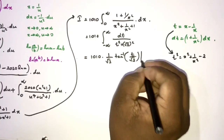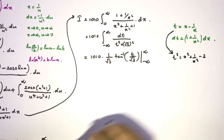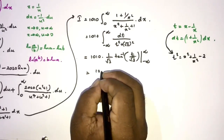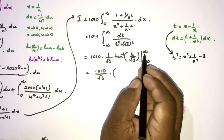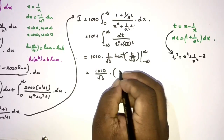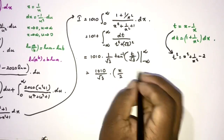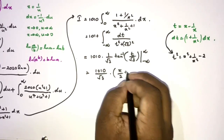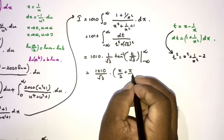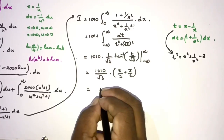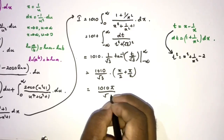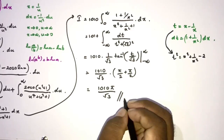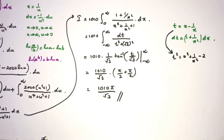We evaluate: the integral gives 1 over square root of 3 times inverse tan of t over square root of 3, evaluated from minus infinity to infinity. Applying the limits, we get pi over 2 plus pi over 2 equals pi, divided by square root of 3, so the final answer is 1010 times pi over square root of 3. If you like this type of integral, please subscribe to this channel. Thank you for watching.